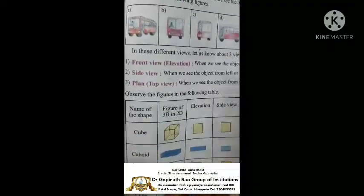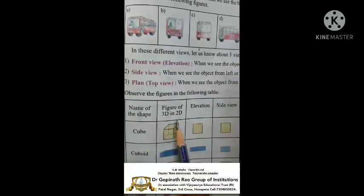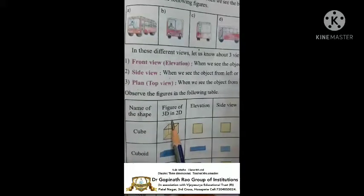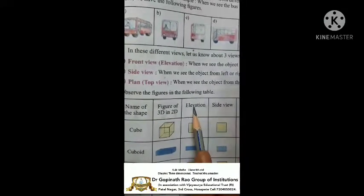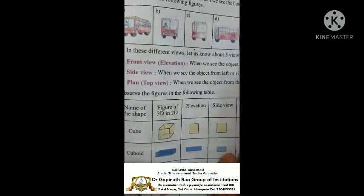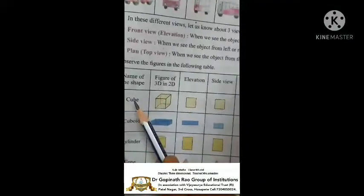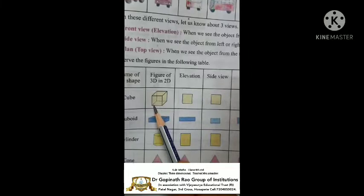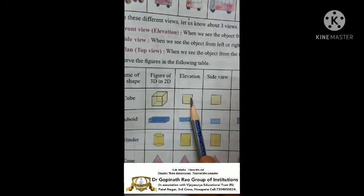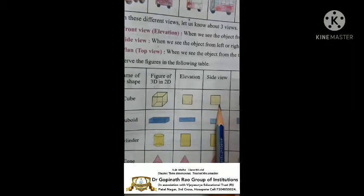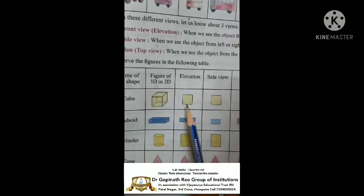Next: name of the shape, figure of 3D in 2D — elevation means front view, side view, and plan means top view. First one is cube structure — this is the 3D figure. The elevation means front view, side view also same, plane also same. Counting the edges: 1, 2, 3, 4, 5, 6, 7, 8, 9, 10, 11, 12. Number of edges: 12.